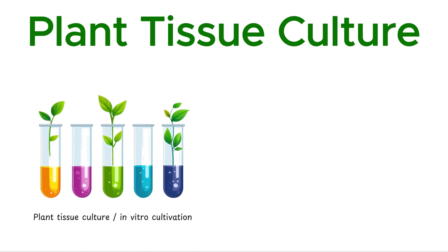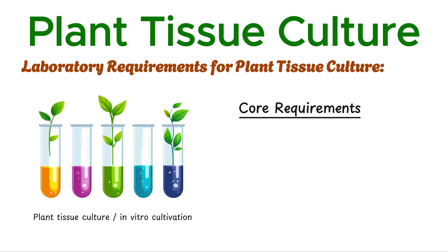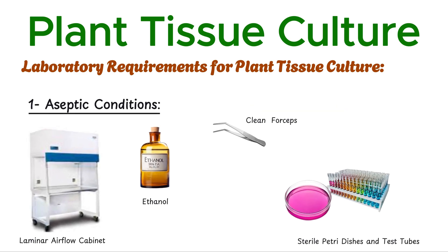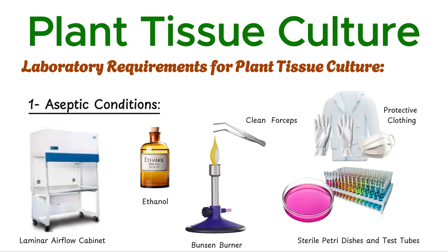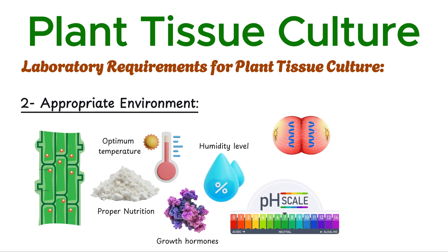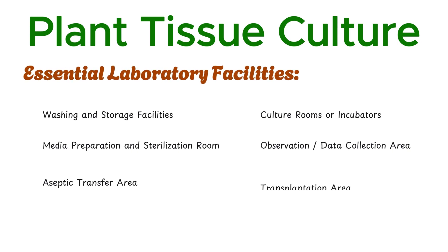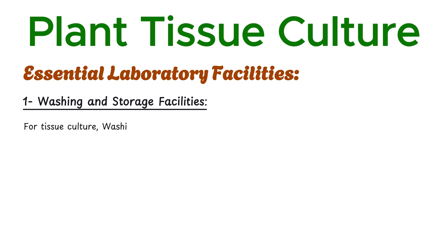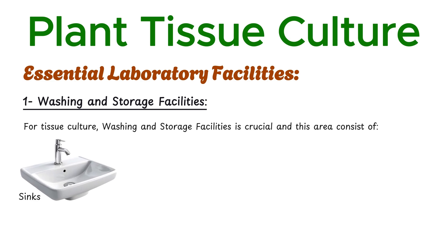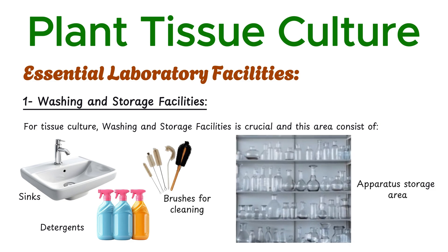Plant tissue culture, or the in vitro cultivation of plant parts, requires specific laboratory conditions and facilities to ensure successful growth and development. Cultivation must occur in a sterile environment to prevent contamination by microorganisms, and the isolated plant material needs optimal conditions to promote cell division and the expression of its regenerative potential. A clean start is crucial: this area is equipped with sinks, detergents, and brushes for thorough cleaning of glassware and tools. Sterilized items are then stored in dedicated shelves or cabinets, ready for use in the culture process.